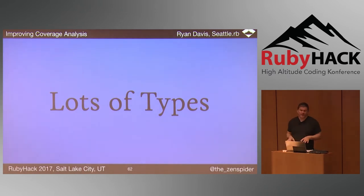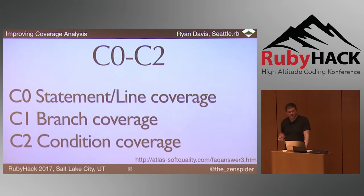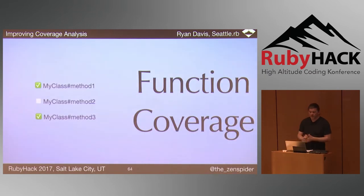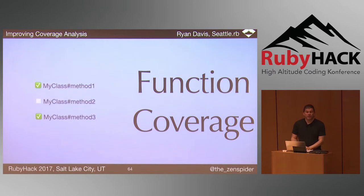There are a lot of different ways to measure coverage. C0: has each line of source code been executed? C1: have control structures like if evaluated to true or false? C2: has each boolean in each sub-expression evaluated to true and false? Functional coverage is simply what percentage of functions were called at all — not terribly useful in my opinion, but it has some utility, like my tool Debreed. At RubyConf last year there was a talk called Deletion Driven Development, and it was fantastic.